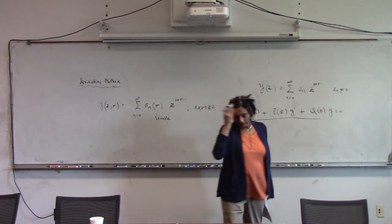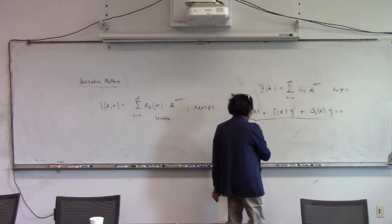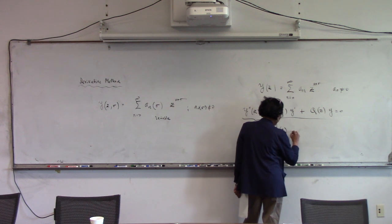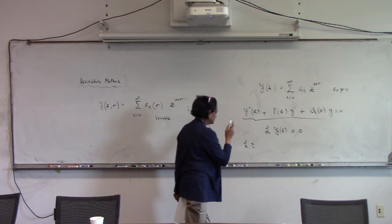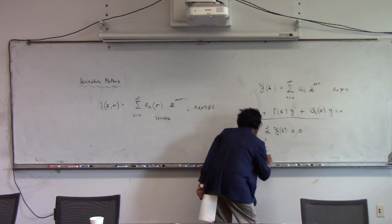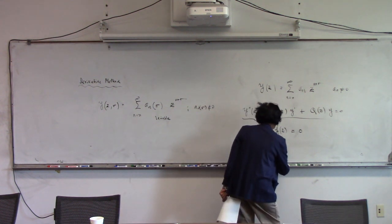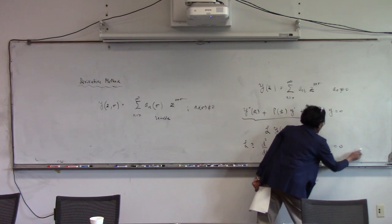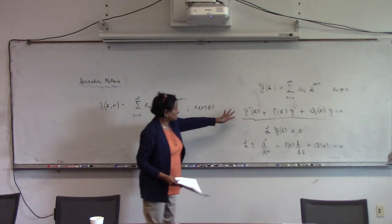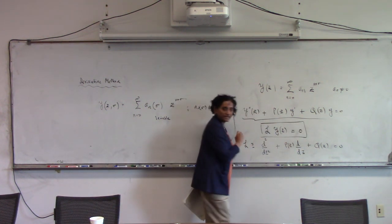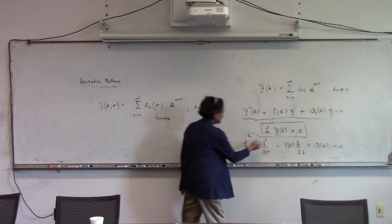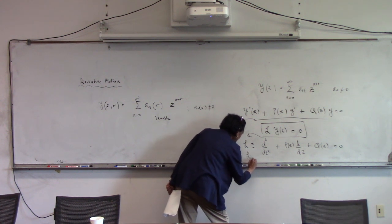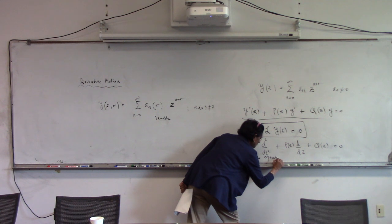I'm going to write this differential equation in a certain form. I can write this as L operating on y of z equal to zero, where L is your linear differential operator. We will write the homogeneous differential equation in this concise notation. L here represents all these things — it is also a linear operator because it is also a differential operator.